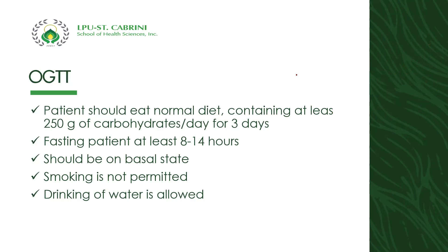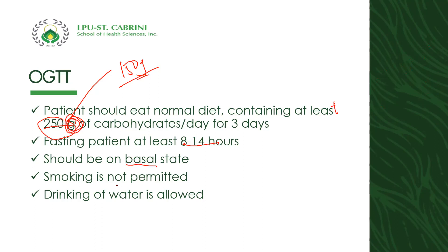For OGTT, the patient should eat a normal diet containing at least 250 grams of carbohydrates per day for at least 3 days prior to testing. The patient must fast for at least 8 to 14 hours, should be on basal state, smoking is prohibited, and drinking water is allowed.